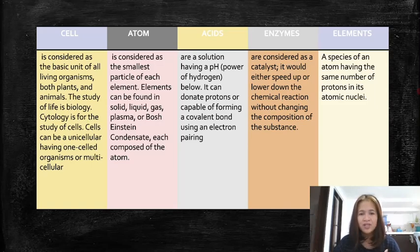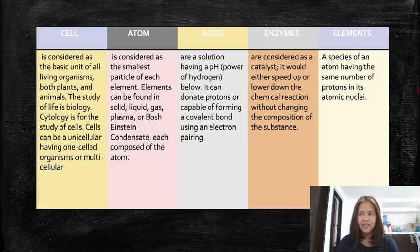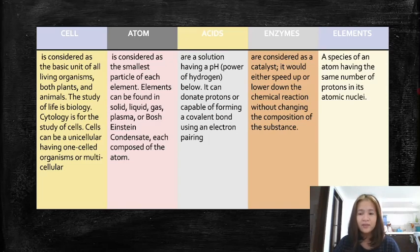An atom is considered the smallest particle of each element. Elements can be found in solid, liquid, gas, plasma, or Bose-Einstein states. The atom is also the smallest unit of the element in every solid, liquid, gas, plasma, and many more. The atom is also known as the basic building block for all matter in the universe.